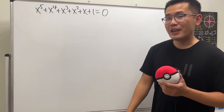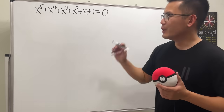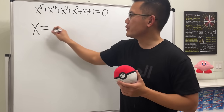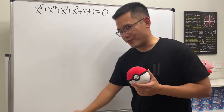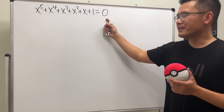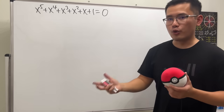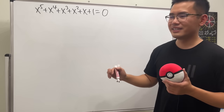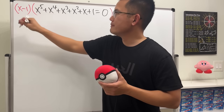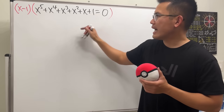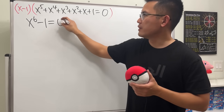Level five: finally, we have this quintic equation. I'll show you the quintic formula — just kidding. Unfortunately there's no such formula. We could solve this particular equation by factoring and grouping, but instead let's multiply through by x minus one. The left-hand side becomes x to the sixth power minus one, and the right-hand side remains zero.